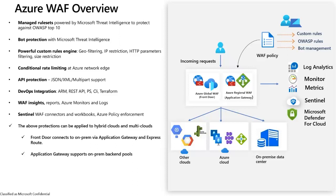We have the flexibility to create custom rules as well. With custom rules, we can be more specific about what kind of traffic we want to allow and deny, on top of the managed rule sets. We can create custom rules based on geo filtering, IP restriction, HTTP parameters, and size restriction. In the Azure Network Edge — that is, the global WAF with Front Door — we also have conditional rate limiting, where we can limit the number of requests coming to the application in a given duration, protecting from large volumes of incoming requests and thereby preserving application availability.